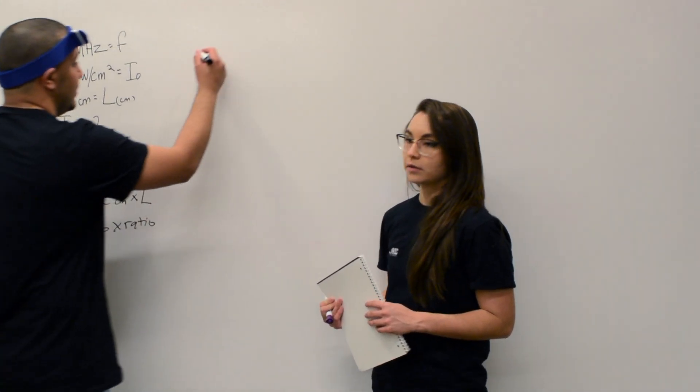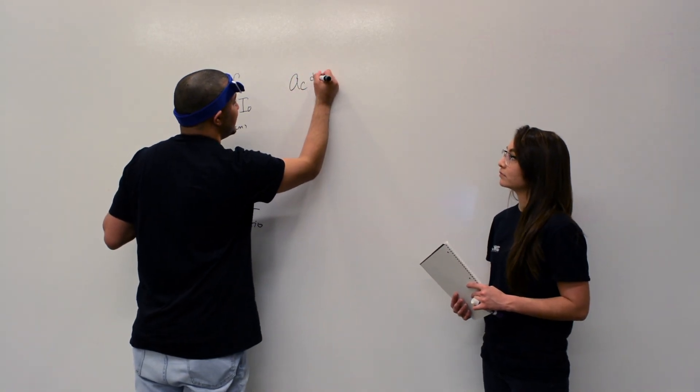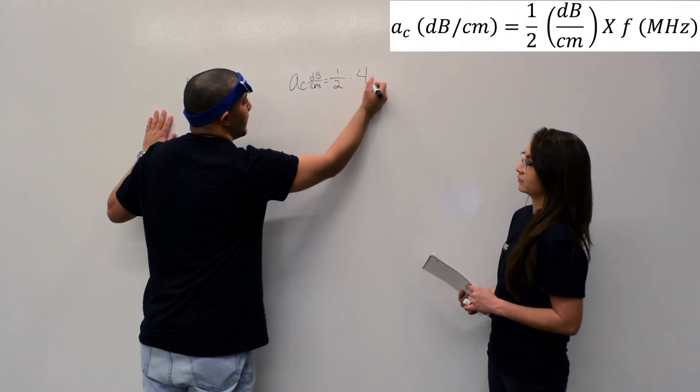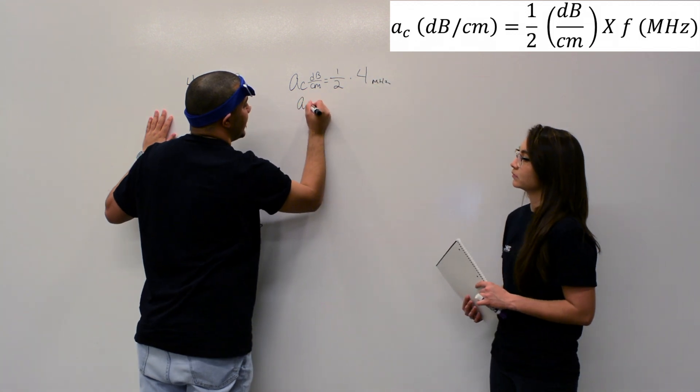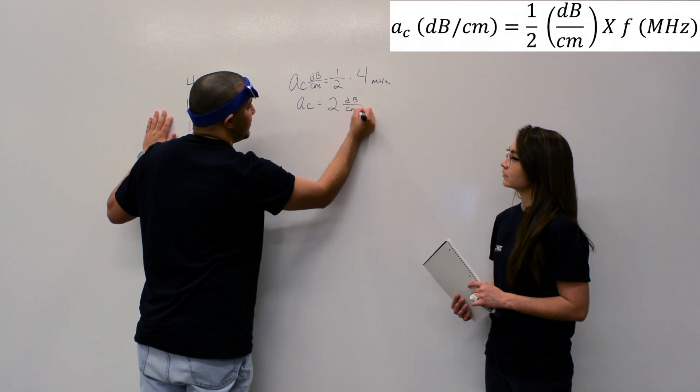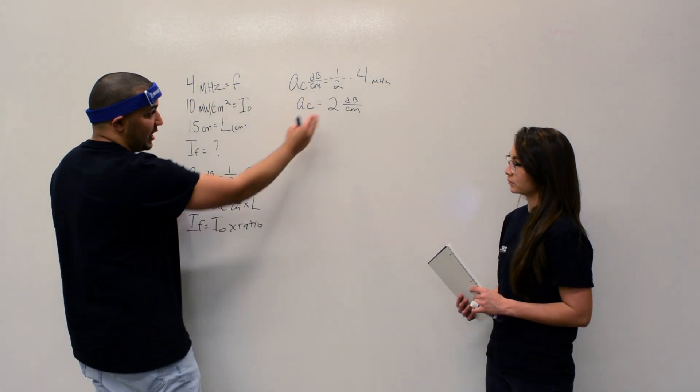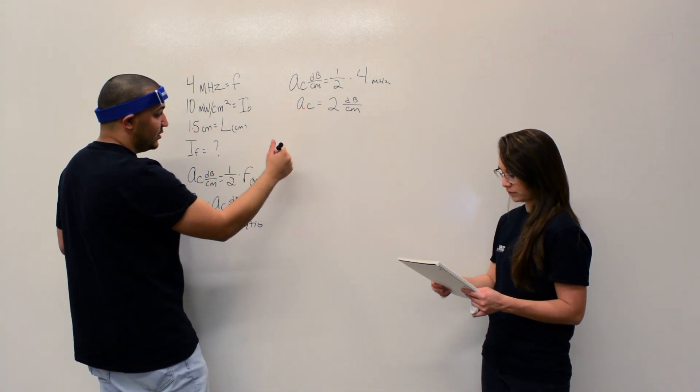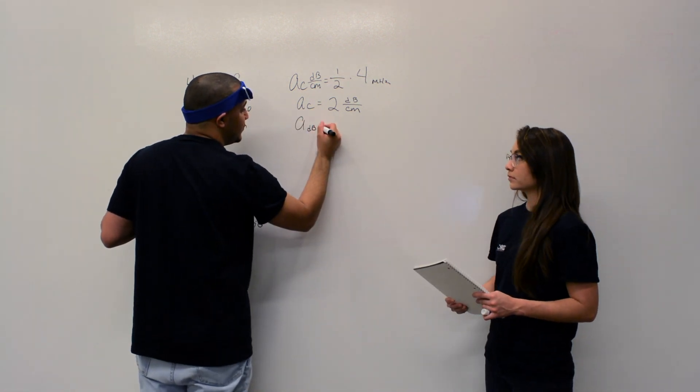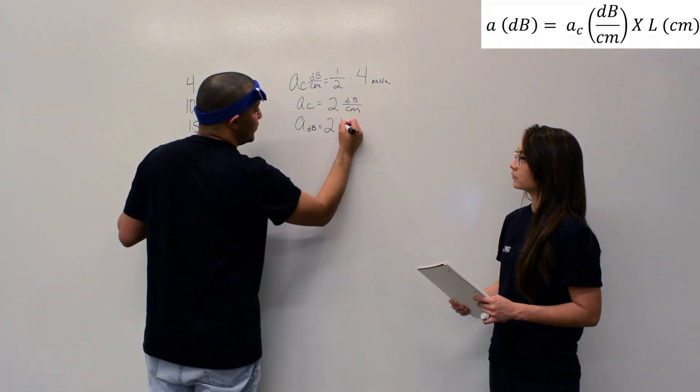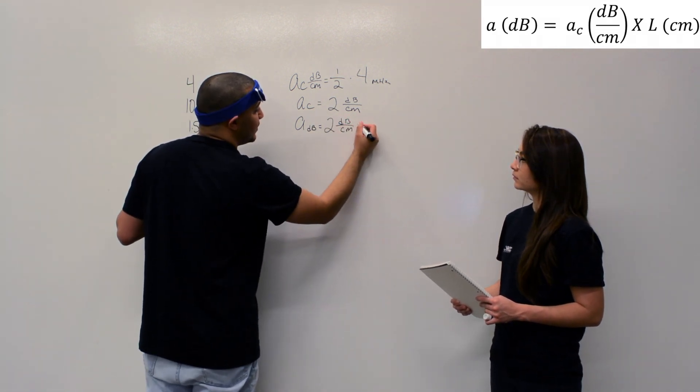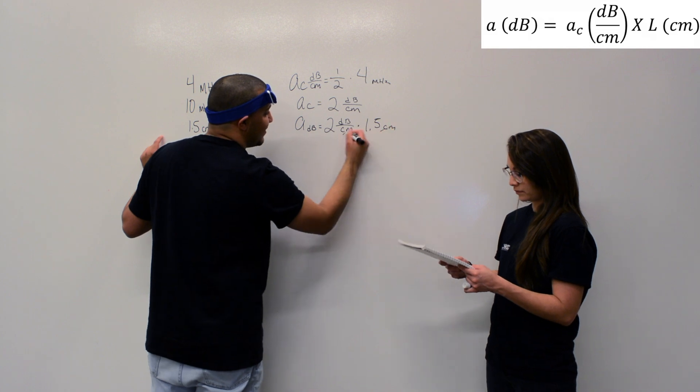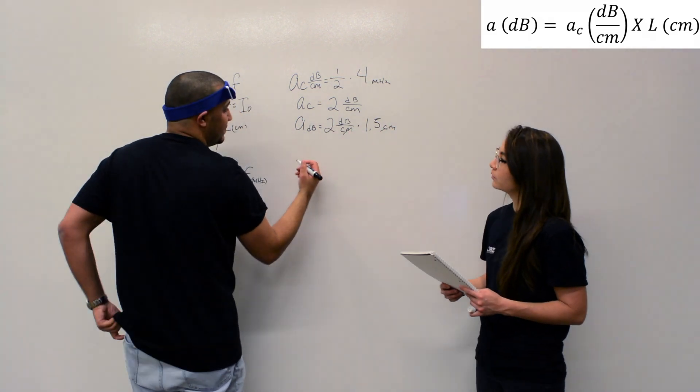So let's start from step one. We do have a frequency, so what do we do? Plug it in. So AC decibels over centimeter equals one-half times your frequency of four. And that ends up being AC equals two decibels over centimeters. And then we plug into the next step. So now we have two centimeters and we have a length of 1.5. We're plugging in from our attenuation coefficient, and we're now looking for attenuation. So attenuation decibels equals, that's your AC, two dB over centimeters times your length of 1.5, 1.5 centimeters. The centimeters cancel out and you end up with three decibels.